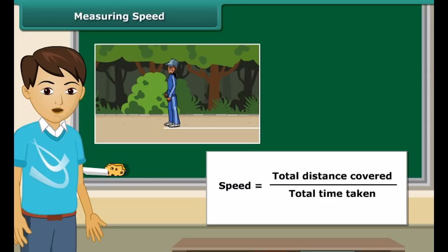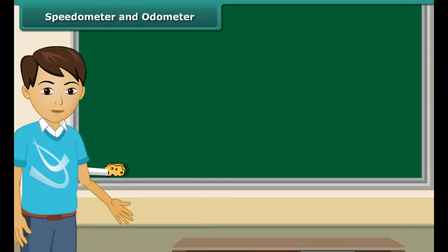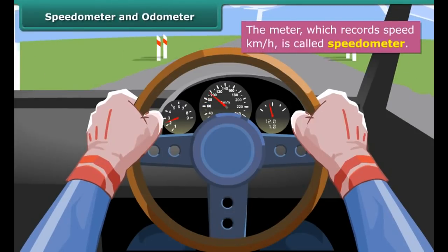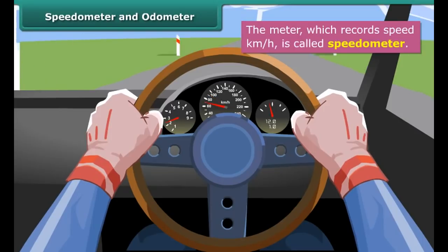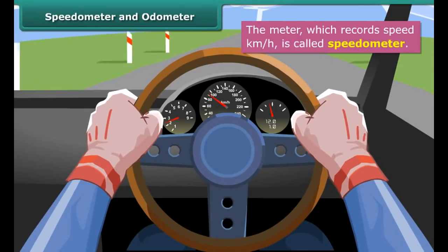To measure the speed of an object, we measure the distance covered and the time taken to cover that distance, then apply the formula of speed. Here is a simple exercise: draw a line and ask a friend to stand on it. Allow him to run until he wants to stop. Note the total time taken from start to stop, then measure the distance covered. Divide the distance covered by the time taken. What you have calculated is the running speed of your friend.